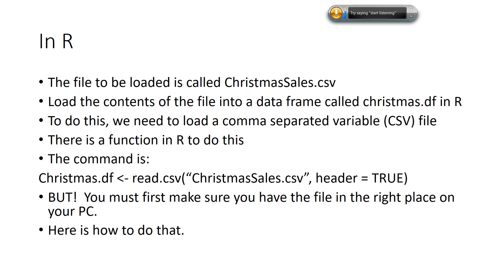The command is: christmas.df is set equal to the result of the function read.csv. Note that 'christmas' should be lowercase — that's PowerPoint forcing capitals. We give read.csv the file name ChristmasSales.csv, and then the argument header=TRUE. Header equals TRUE means the first row of the file contains your column headers. One important thing: in R or Python, Boolean values true and false are always indicated in all caps — that's an exception to the general rule that things are lowercase.